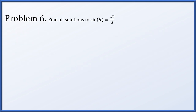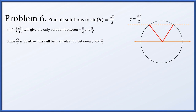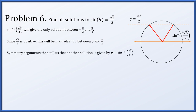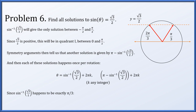In problem 6, we find all solutions to sine theta equals root 3 over 2. On the unit circle, there are two angles where this occurs. Taking arcsine gives the quadrant 1 solution arcsine of root 3 over 2. By symmetry, pi minus arcsine of root 3 over 2 is the quadrant 2 solution. Each occurs once per rotation, so all solutions are arcsine of root 3 over 2 plus 2 pi times k, and pi minus arcsine of root 3 over 2 plus 2 pi times k. Since arcsine of root 3 over 2 equals pi over 3, you could substitute that optionally.